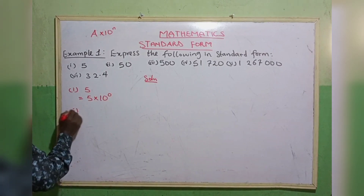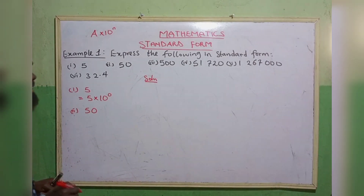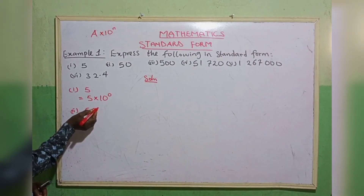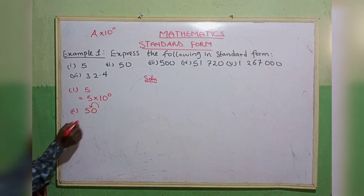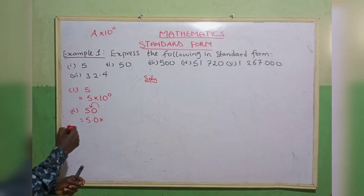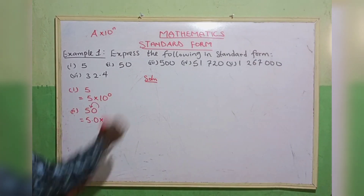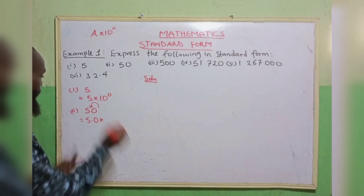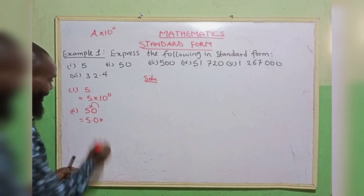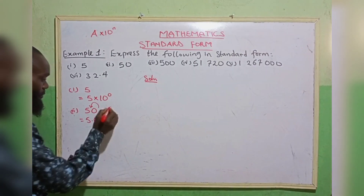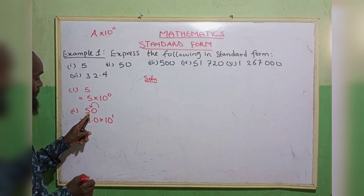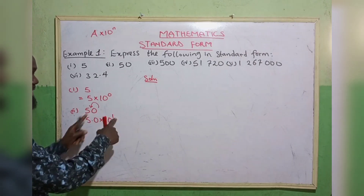The second one: 50. We shift the decimal point forward, giving us 5.0. When you are moving forward, that is positive; if you are moving backward, that will be negative. So, moving forward — how many times do I move forward? I move forward one time. That is 10 raised to the power 1. You can also count how many digits come after the 5 — we have just 1 digit, so the power is 1.